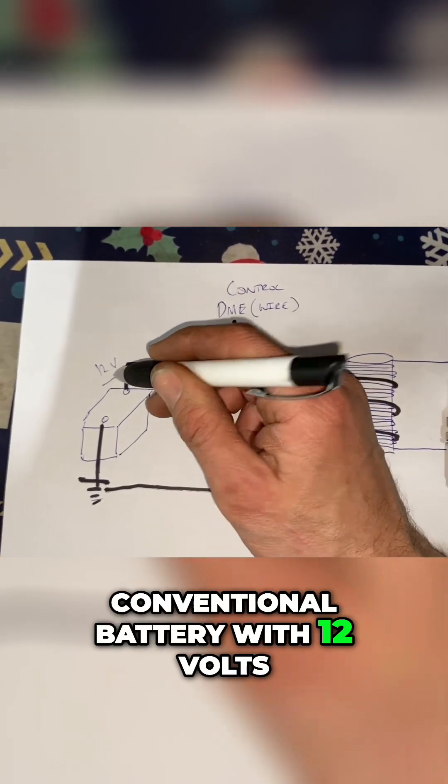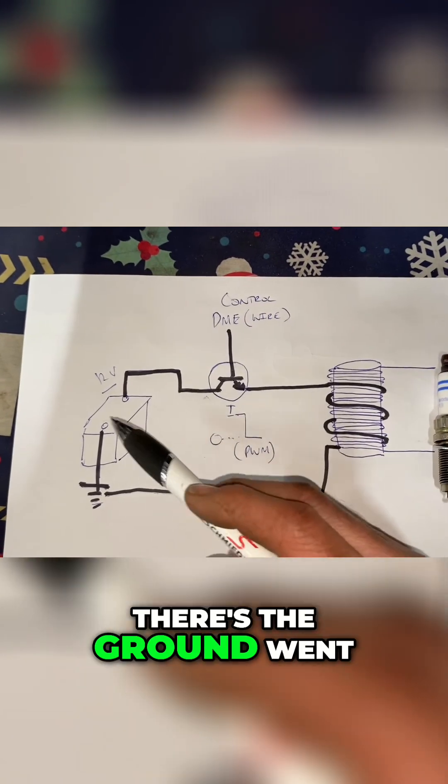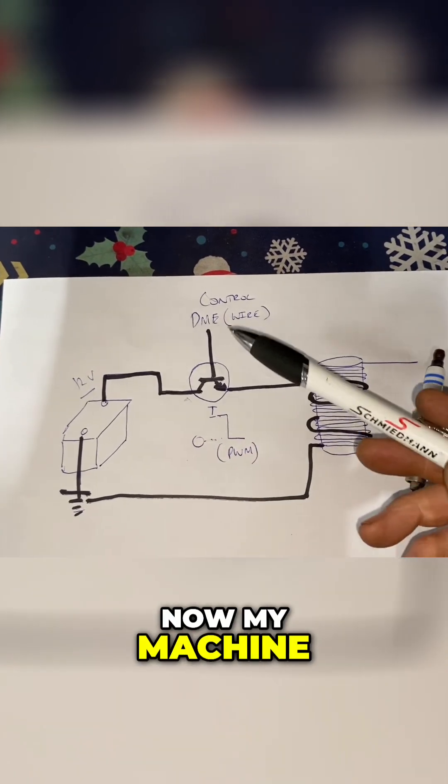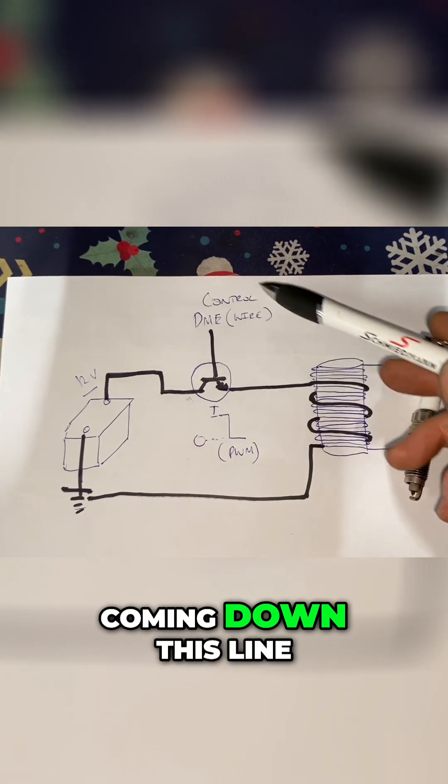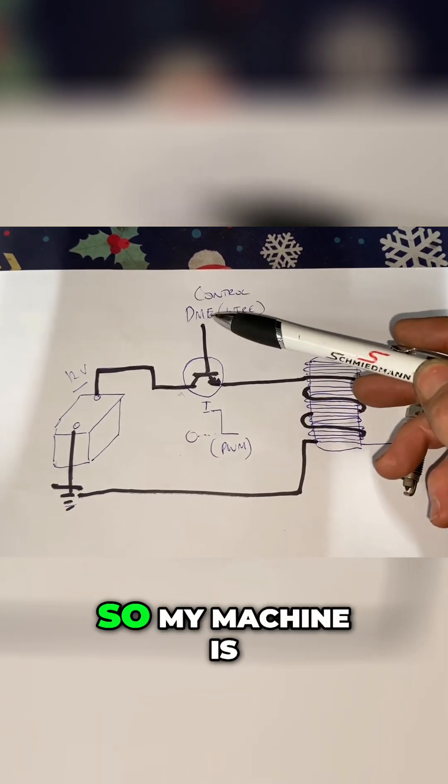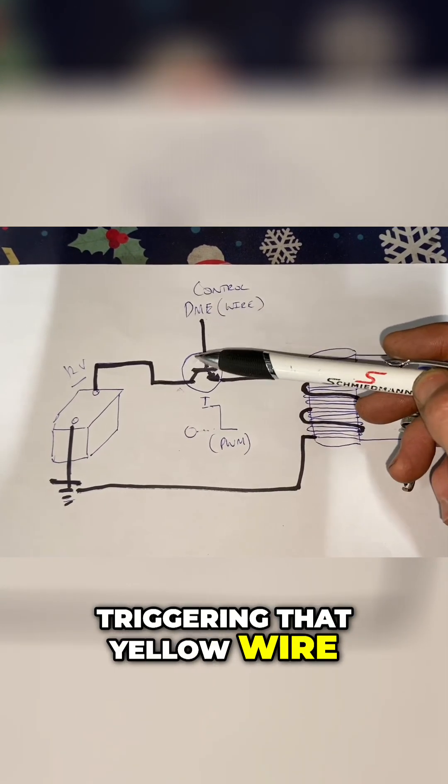There's the ground going to chassis ground. Now my machine is coming down this line here from the engine ECU DME, so my machine is triggering like a yellow wire, a transistor inside the ignition coil which is here.